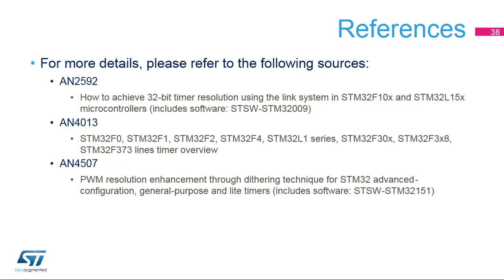Three application notes complement the timer sections in the reference manual. AN-2592 gives a practical implementation of a 32-bit timer made of two synchronized 16-bit timers and is useful for understanding the overall timer synchronization mechanism, with a software example. AN-4013 provides a more detailed overview of all timer features with available firmware examples. AN-4507 presents an implementation of PWM resolution enhancement by means of dithering techniques, with a software example.